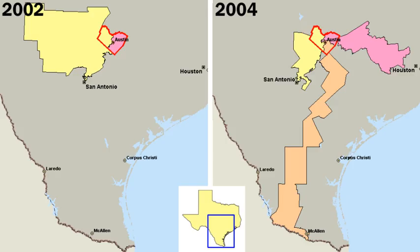The United States has 89,500 local governments, including 3,033 counties, 19,492 municipalities, 16,500 townships, 13,000 school districts, and 37,000 other special districts that deal with issues like fire protection. Local governments directly serve the needs of the people, providing everything from police and fire protection to sanitary codes, health regulations, education, public transportation, and housing. Typically local elections are non-partisan.